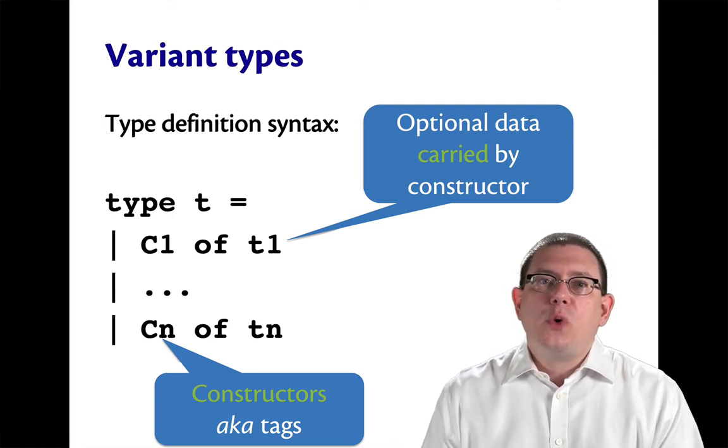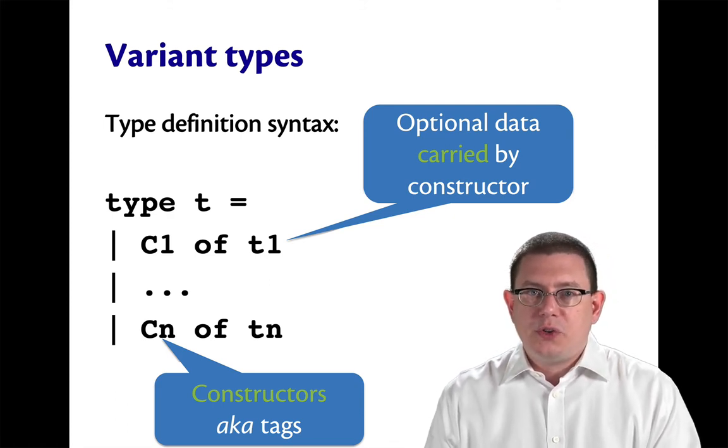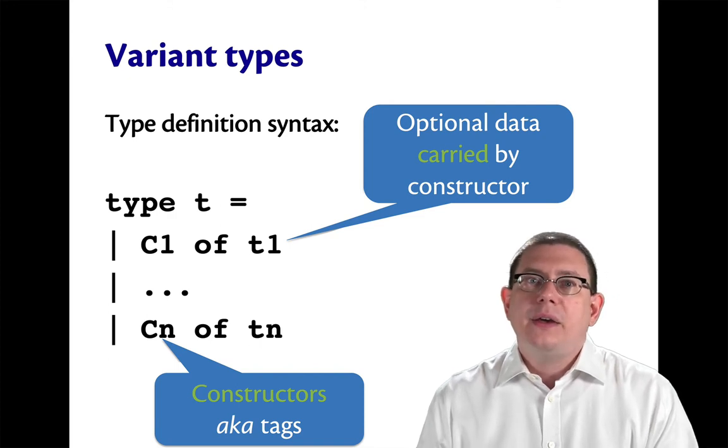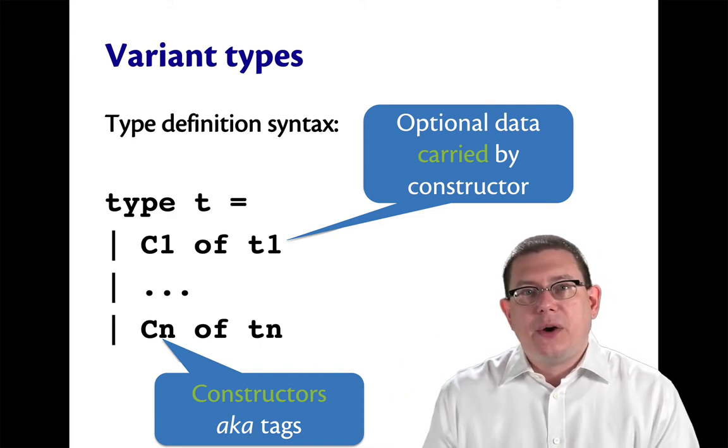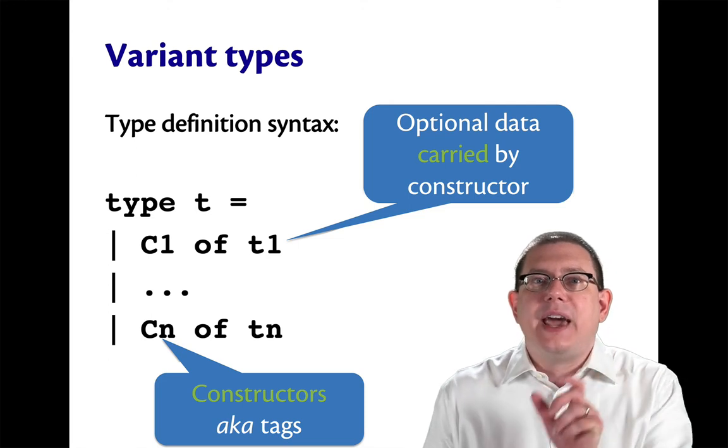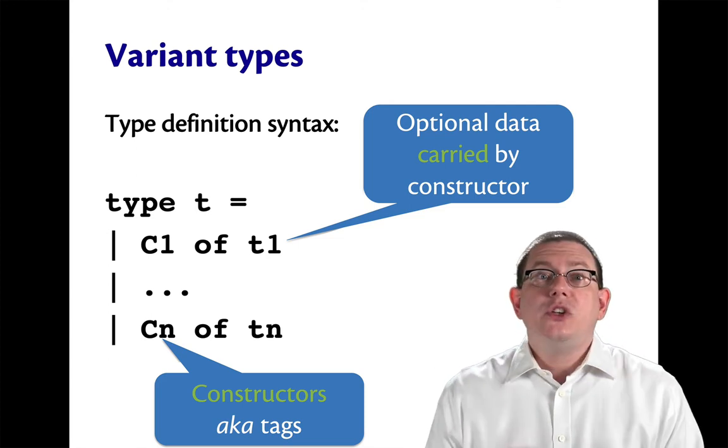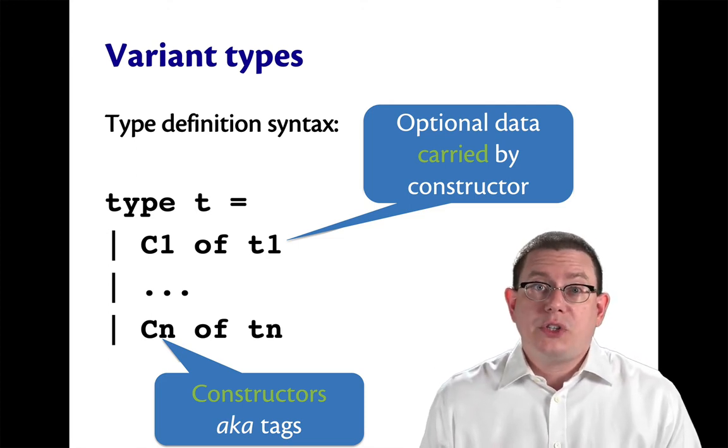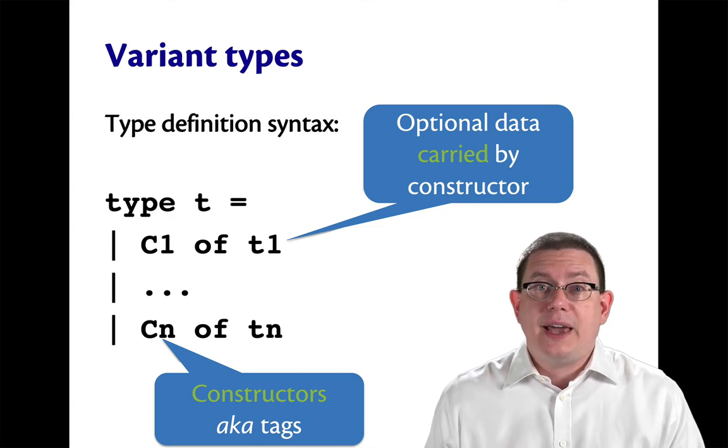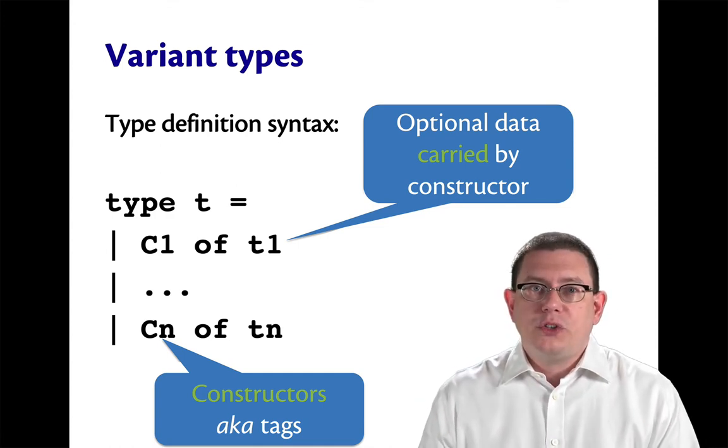There's a synonym for the word constructor that sometimes people will use. It's sometimes called a tag. So it's like you've got all of this additional data that's carried along and then it's tagged to say what kind of data it is. So the record carried along with the circle, for example, is tagged to say it is a circle by that circle constructor.